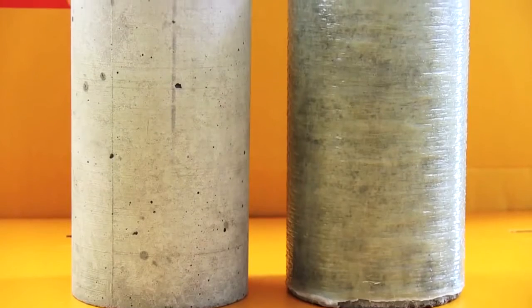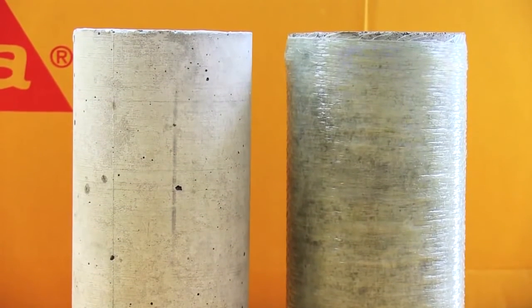First we took two concrete columns, identical in their size, weight and compressive strength. The only difference being that one had been wrapped with Sika Wrap.